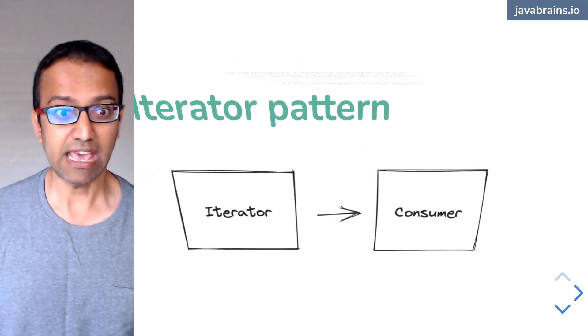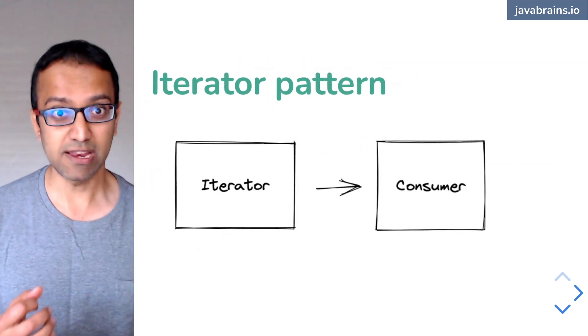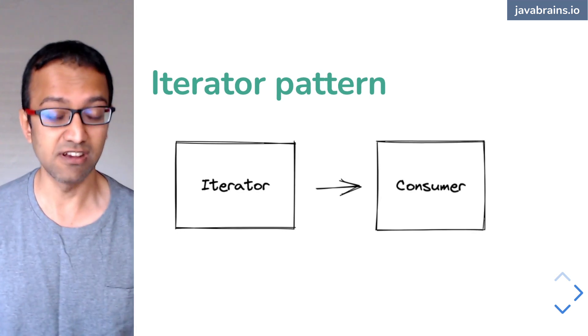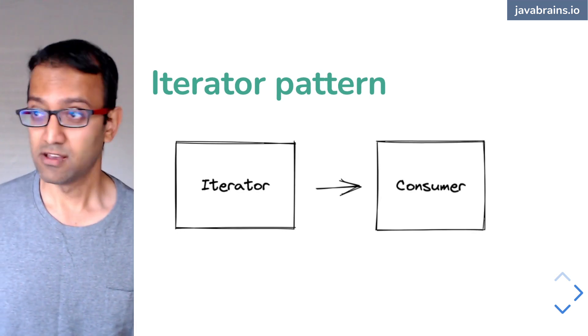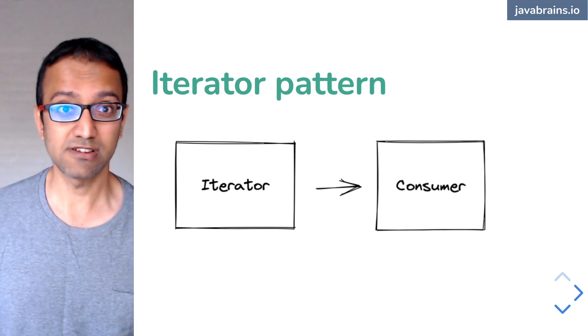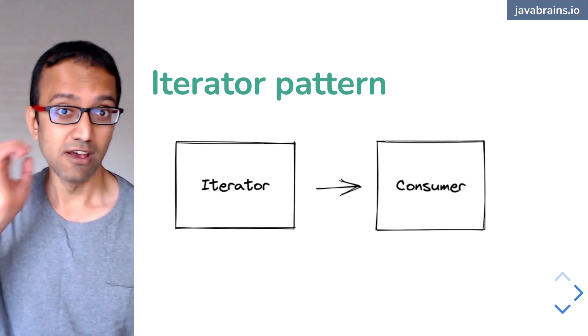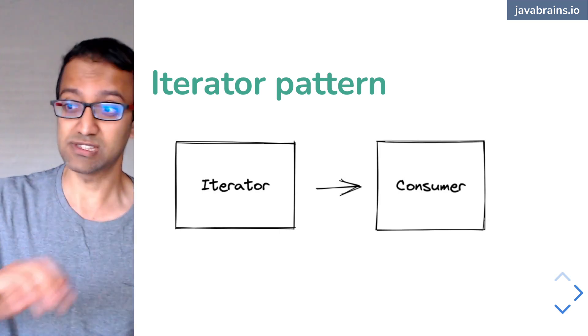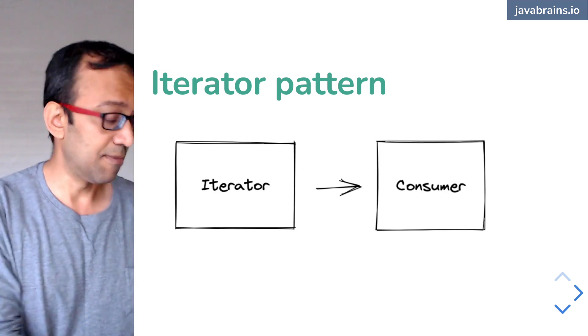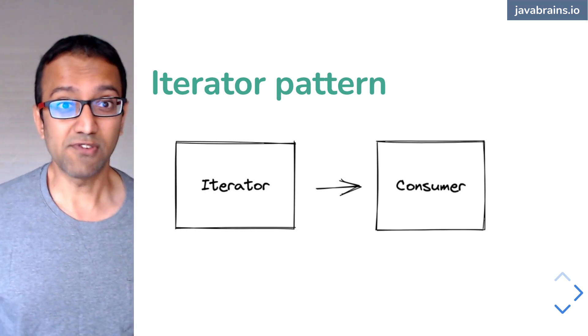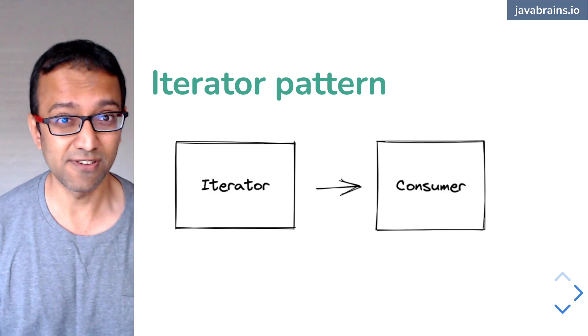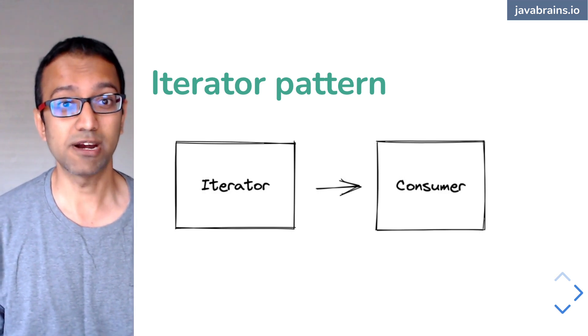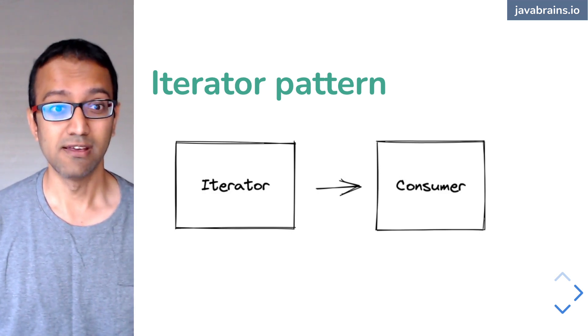Why do we iterate over collections? Because it gives us a consistent experience, no matter how the collection fetches the data. You want to get something from an ArrayList? You do a .get. You get something from a set, you use something else. You get something from a map, you use something else. If you have to iterate, you have to write different logic for different collections, but with the iterator pattern, you don't have to.